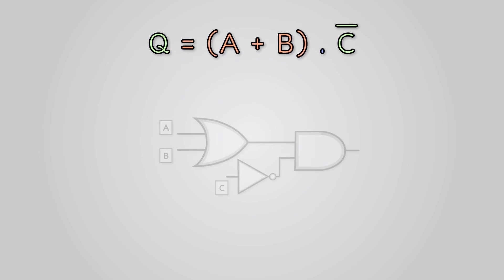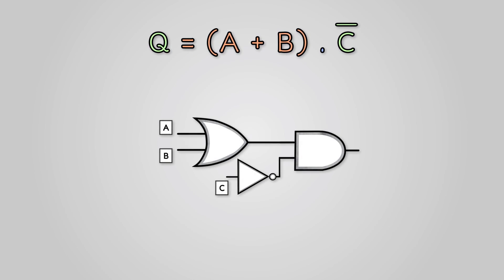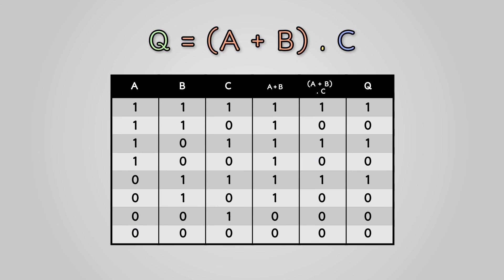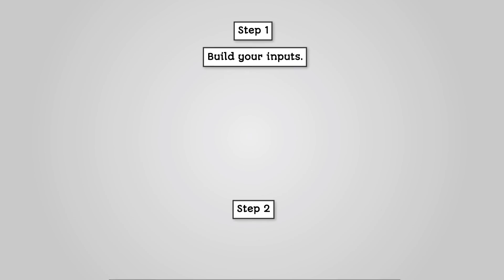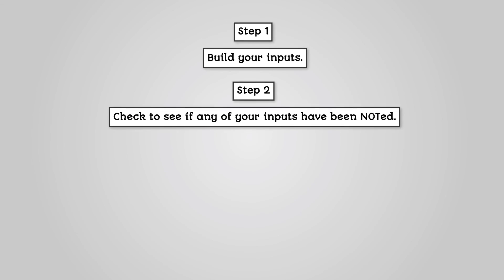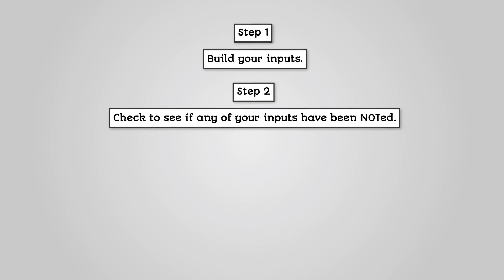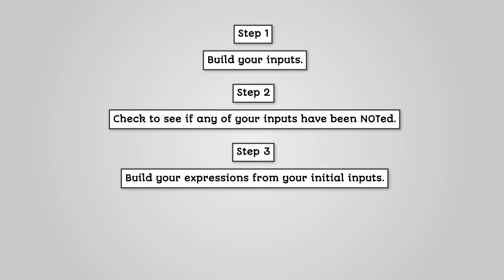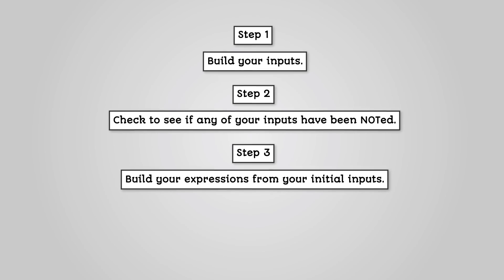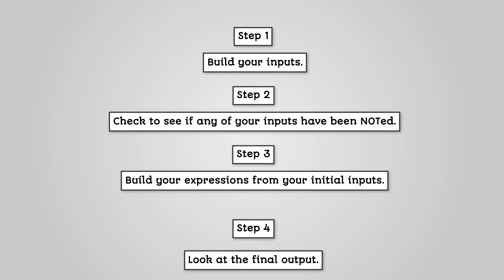You can combine logic gates to draw Boolean expressions. Truth tables can be used to work out the outputs of any Boolean expression, and they can be used to work out the Boolean algebra of any circuit. The truth tables follow 4 steps: Step 1 — Build your inputs. Step 2 — Check to see if any of your inputs have been NOTted. Step 3 — Build your expressions from your initial inputs. Step 4 — Look at the final output.